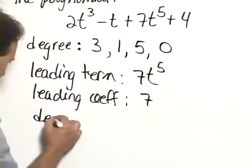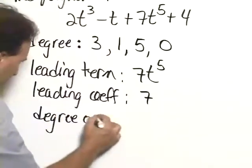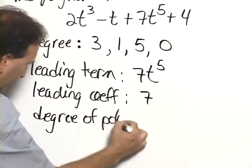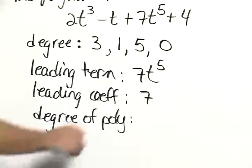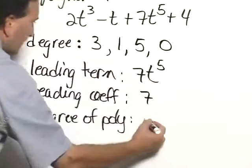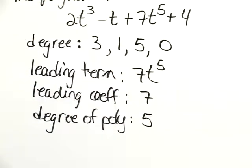Now the degree of the entire polynomial, which I'll abbreviate poly. The degree of the polynomial is the one that's the largest degree. Again, looking at all of the degrees, the largest degree is 5. Therefore, that's the degree of the polynomial.